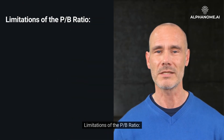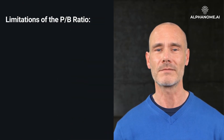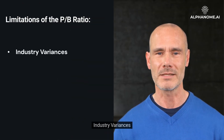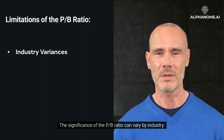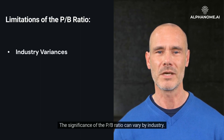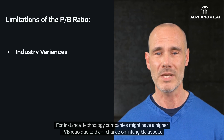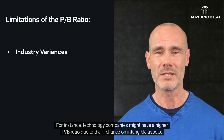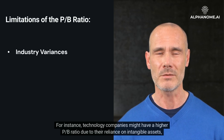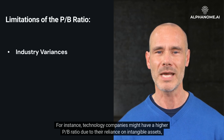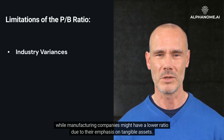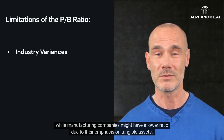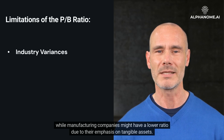There are several limitations of the P/B Ratio to keep in mind. Regarding industry variances, the significance of the P/B Ratio can vary by industry. For instance, technology companies might have a higher P/B Ratio due to their reliance on intangible assets, while manufacturing companies might have a lower ratio due to their emphasis on tangible assets.